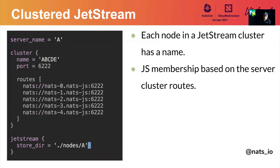In case of clustering, it is very similar to how you would set up a regular fleet of NATS servers. The membership is determined by the cluster routes. Each server that is part of a Jetstream cluster requires a server name. In this case, the configuration shown is for server name A, and we are part of a cluster with five nodes: A, B, C, D, and E.